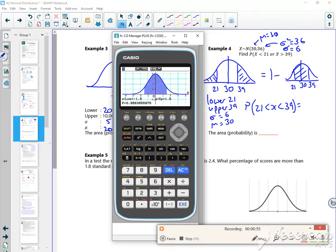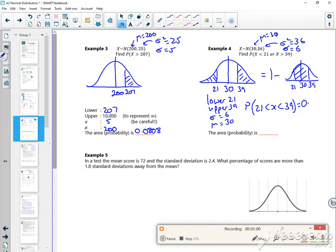So that's 0.8664, so what I want is 1 minus 0.8664, which is 0.1336.